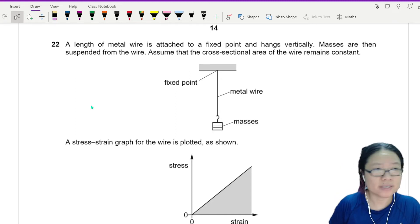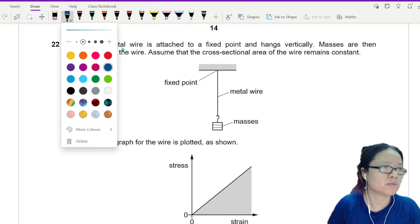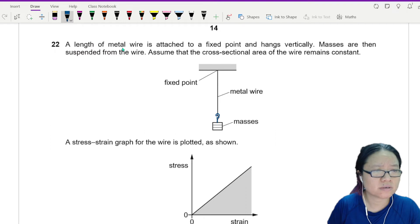A length of metal wire is attached to a fixed point and hangs vertically. So you attach a mass here, and then you hang it, just don't hang yourself.